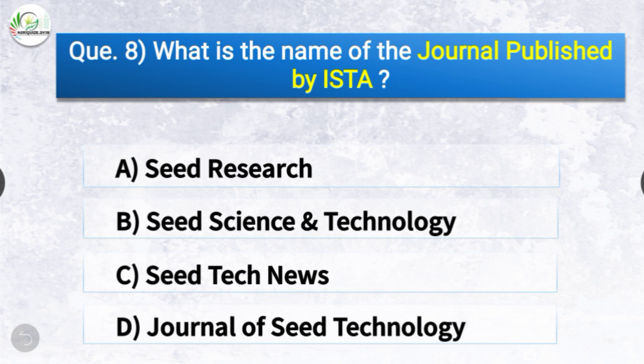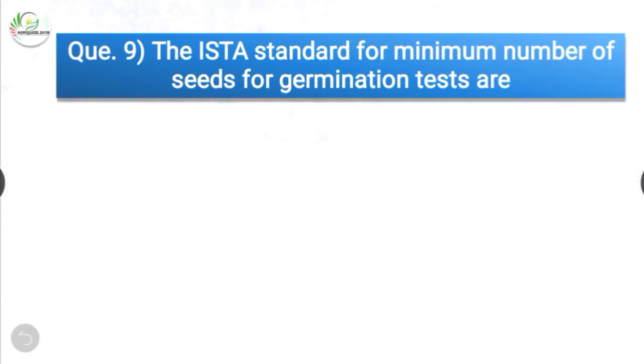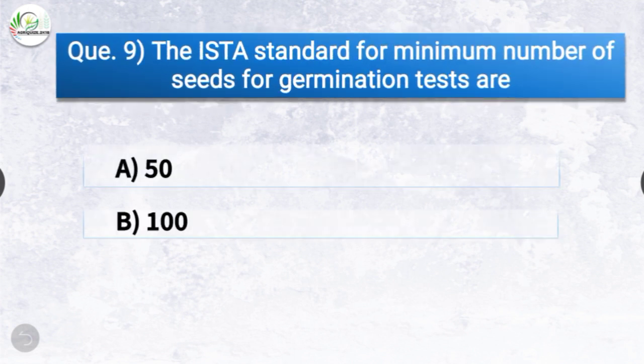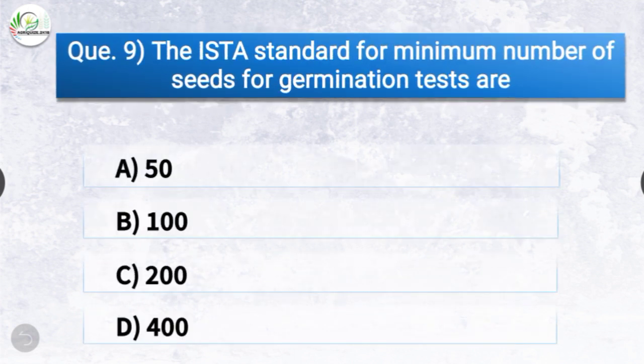Question number eight: What is the name of the journal published by ISTA? The options are Seed Research, Seed Science and Technology, Seed Tech News, or Journal of Seed Technology. The correct answer is option B — Seed Science and Technology. The International Seed Testing Association (ISTA) was founded in 1924 and its headquarters is located in Sph (Switzerland).